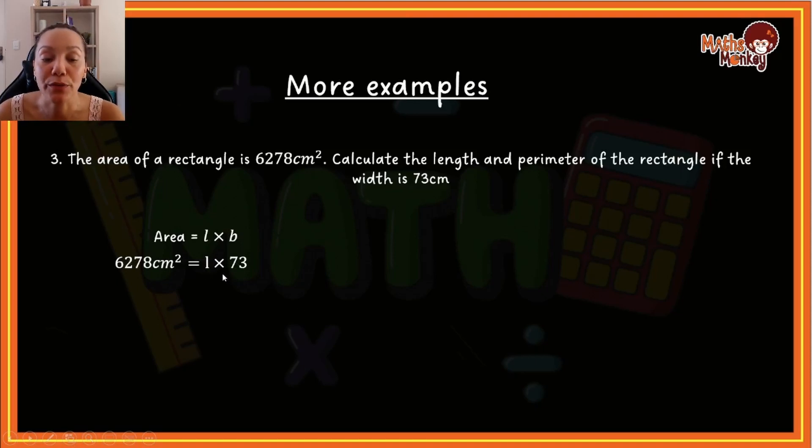Now what we want to do is, if length × 73 equals that, then that divided by 73, which is the opposite, will then give me my length, which is then 86 centimeters. Again, this is just the application of our equations. We want to calculate the length, so we take this over, and if we take it over, we do the opposite. So that is 86.